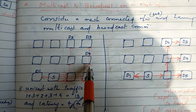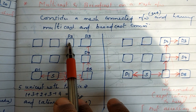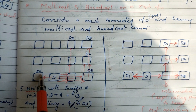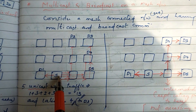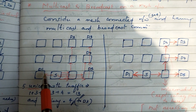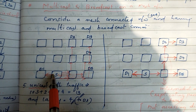The destination nodes are D1, D5, D4, D3, and D2. This is the source node, and we have to add the source node to D1 first.